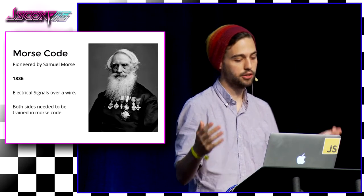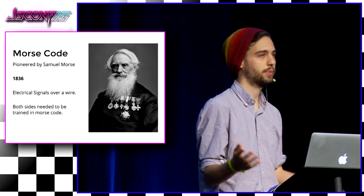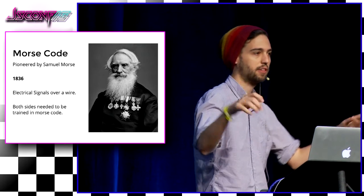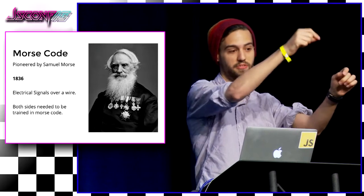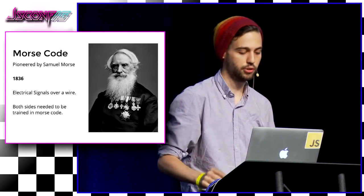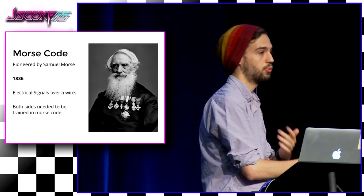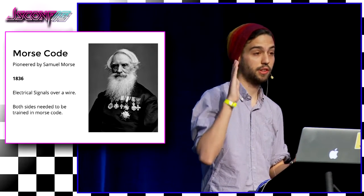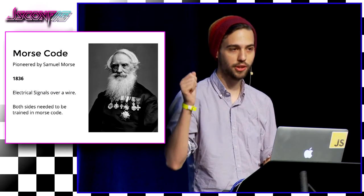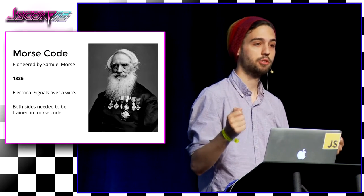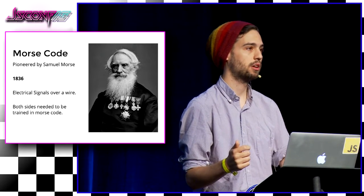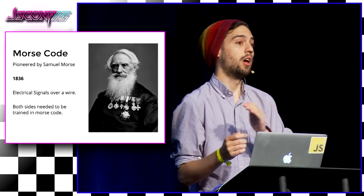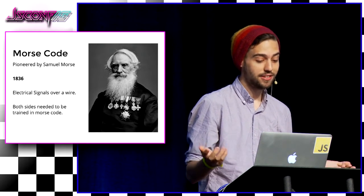He came back to the United States and eventually convinced people this was a real thing. They would run wires from one room to another and have people in both rooms send a message, with a third party verifying the message was real because they thought it was a magic trick. Morse code swept the nation — everywhere was connected in a matter of 20 to 30 years. Telegraphy lines ran all across the world, making it possible to communicate from one side of the world to the other immediately.